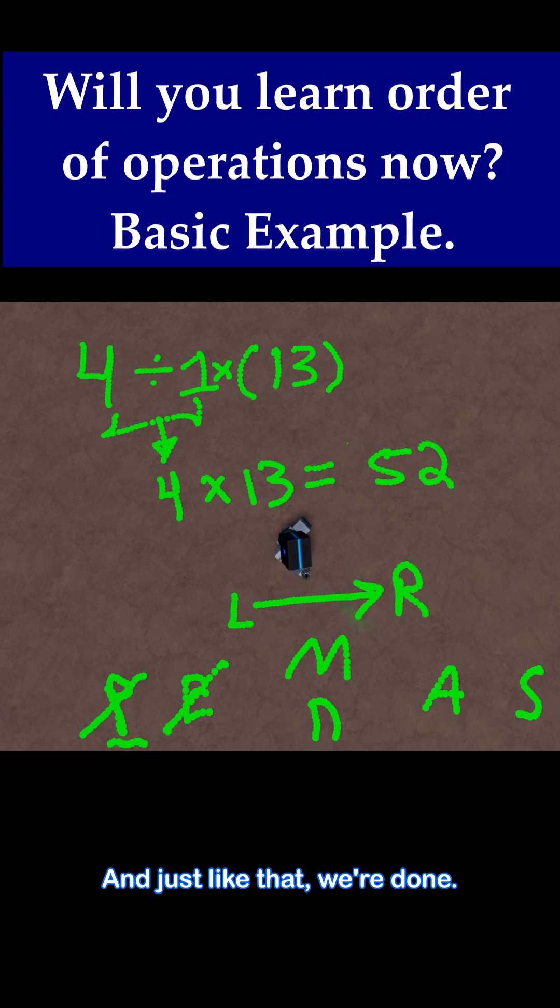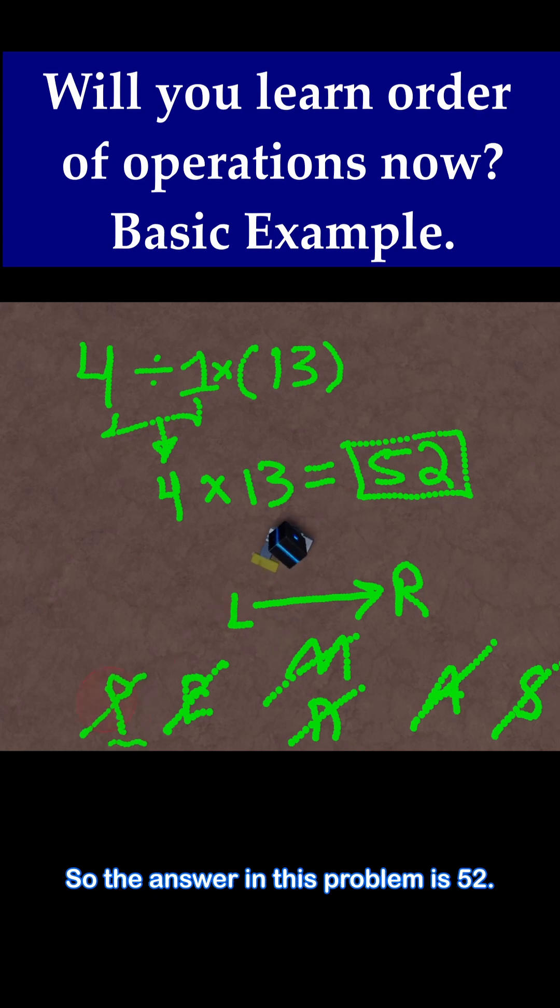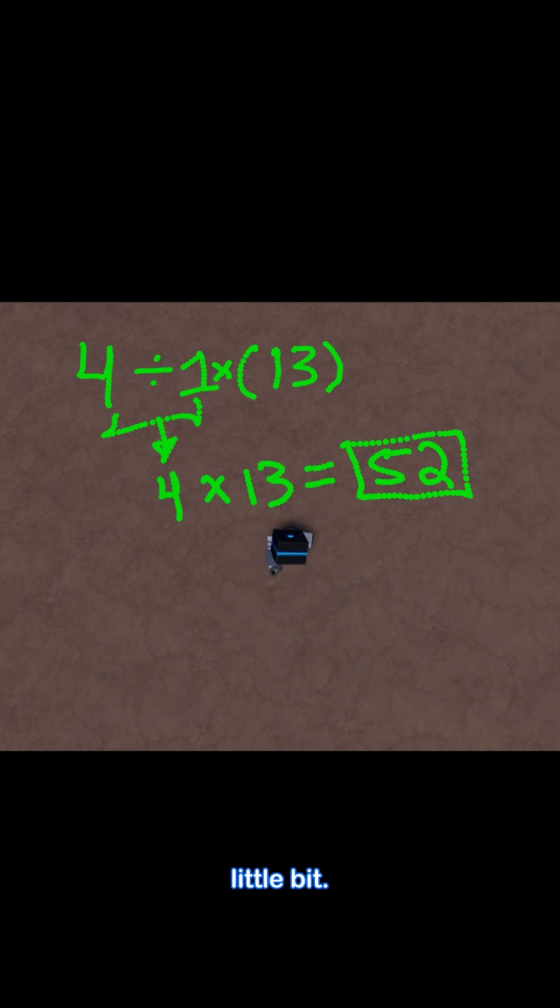And just like that, we're done. And then there's no addition, there's no subtraction, and we're done with all the operations. So just like that, we're done. So the answer to this problem is 52. I hope that clears things up a little bit.